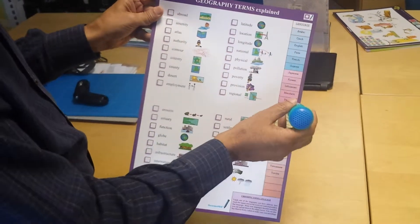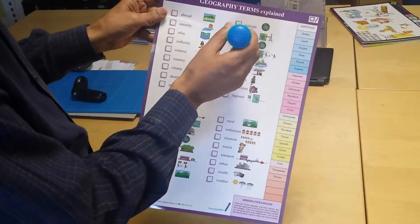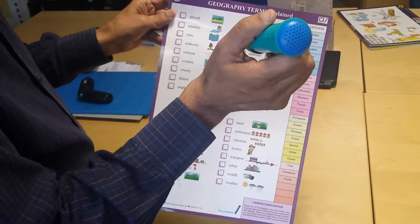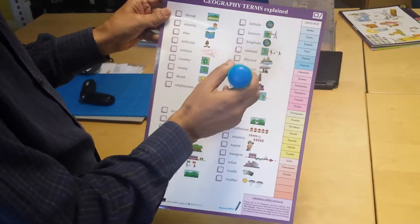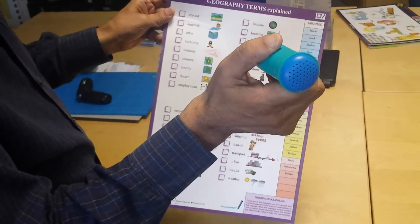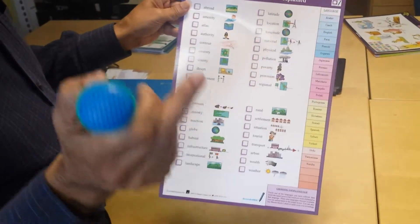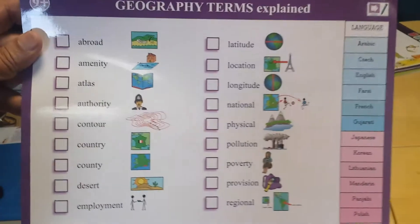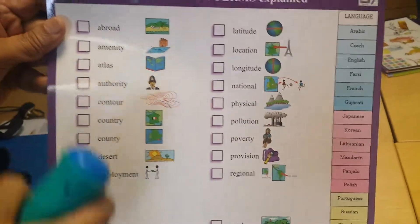I can go and change the language to Polish, go back to longitude: 'długość geograficzna to odległość punktu na wschód.' Then go to poverty: 'bieda brak wystarczających środków materialnych takich jak pieniędzy do zaspokajania potrzeb osoby.'